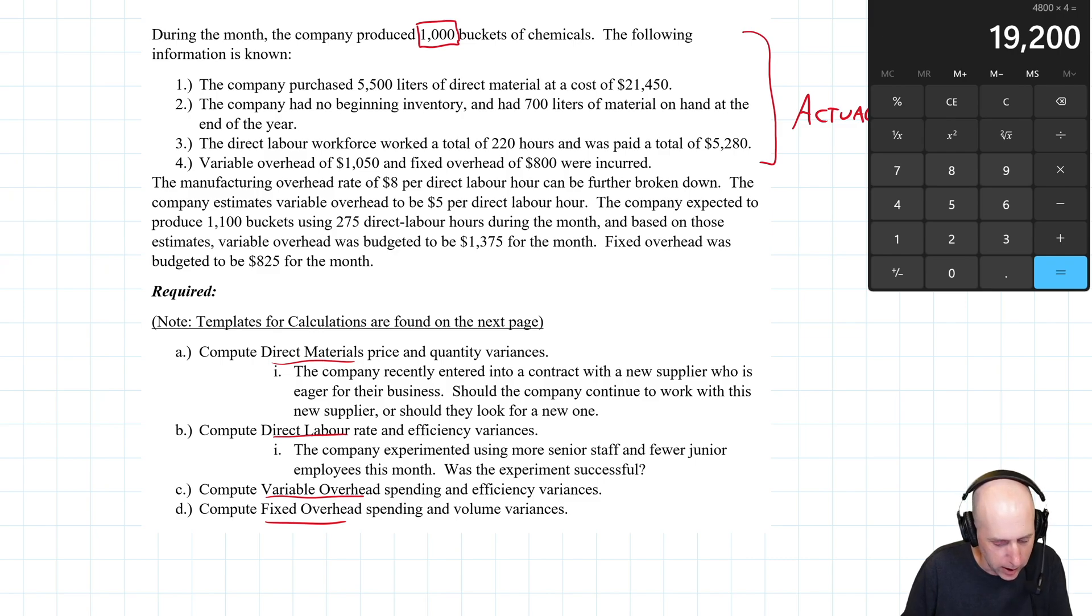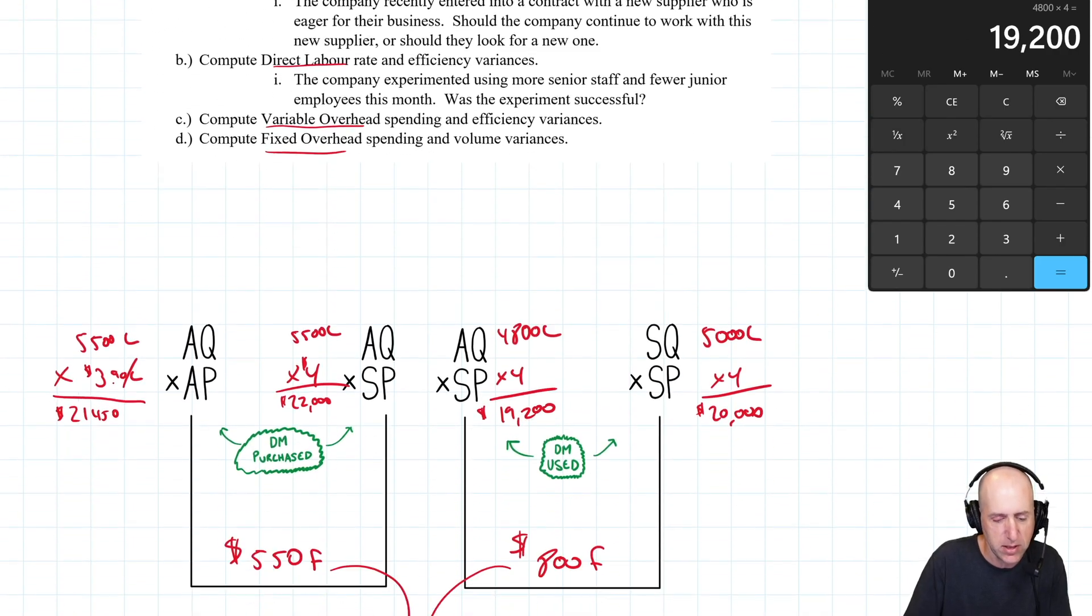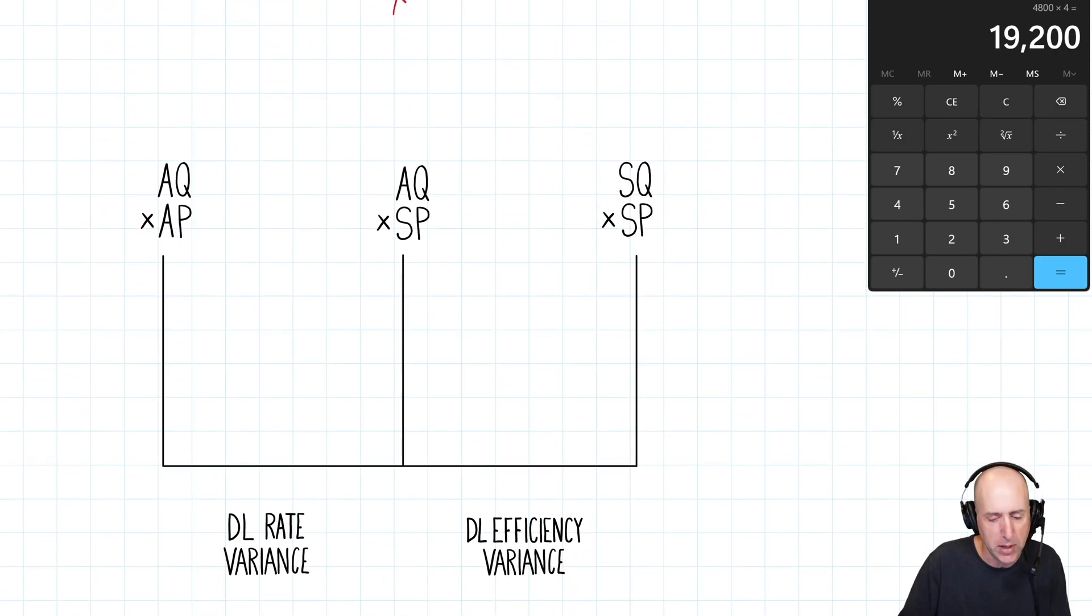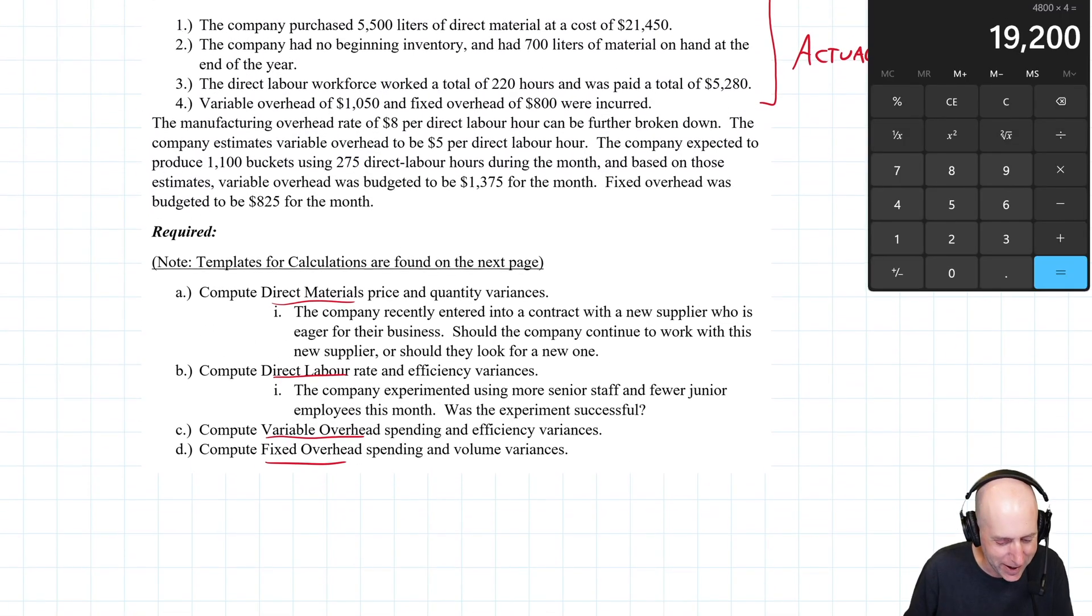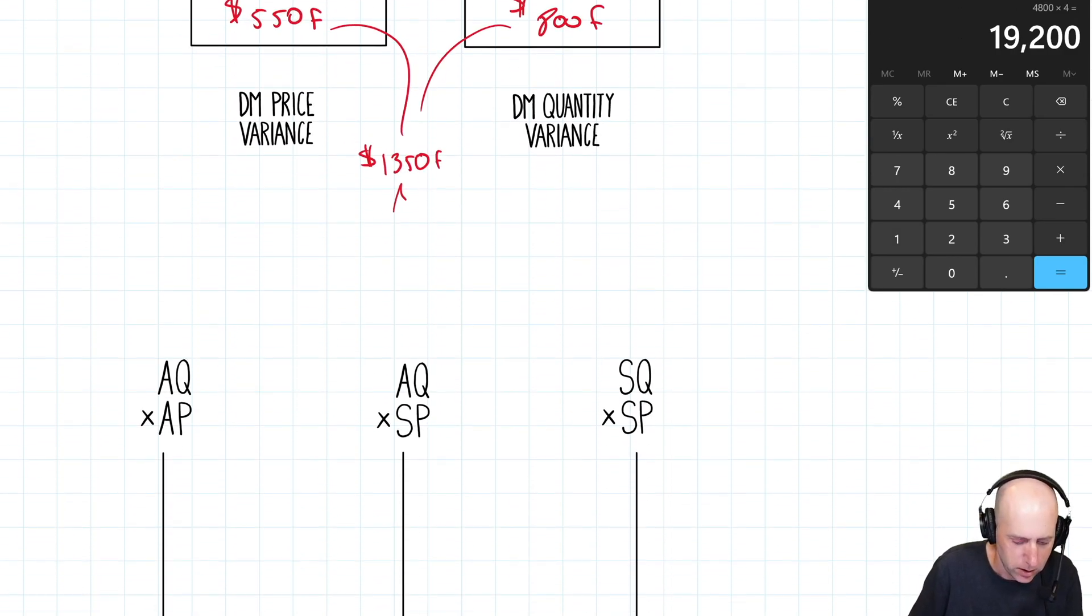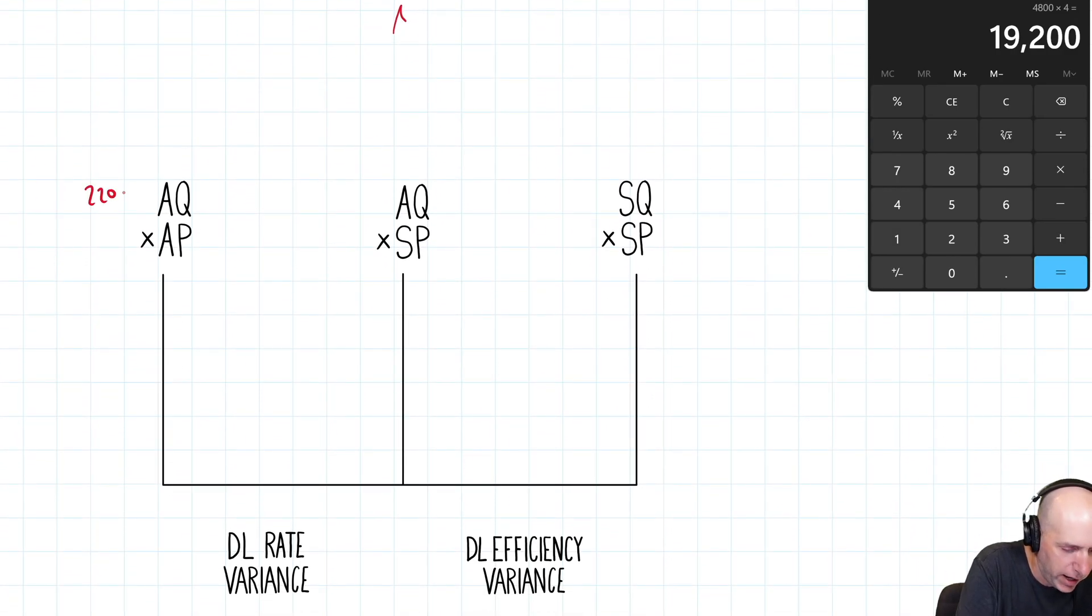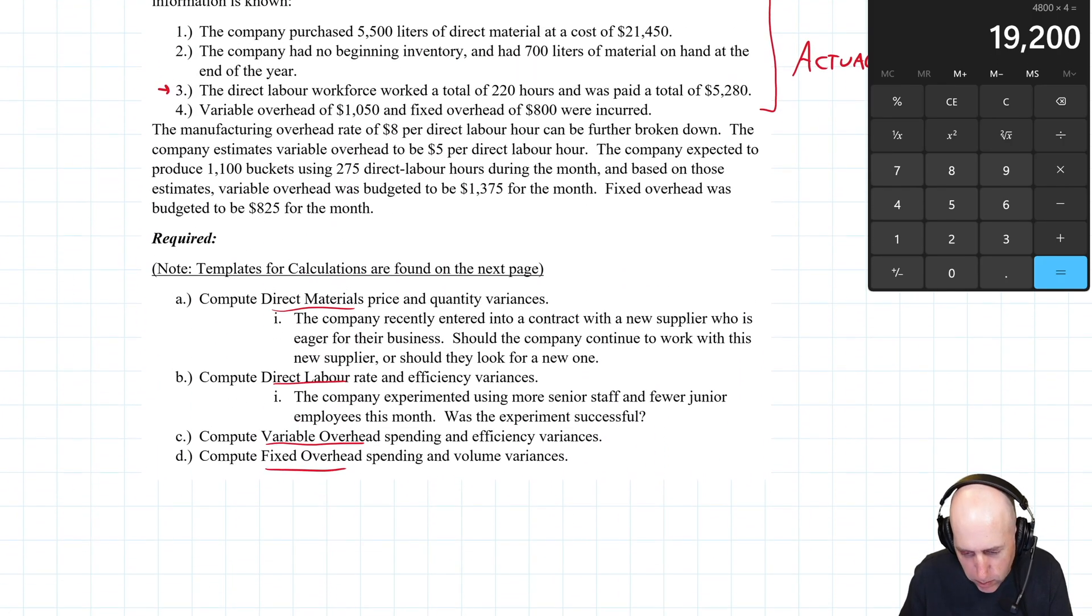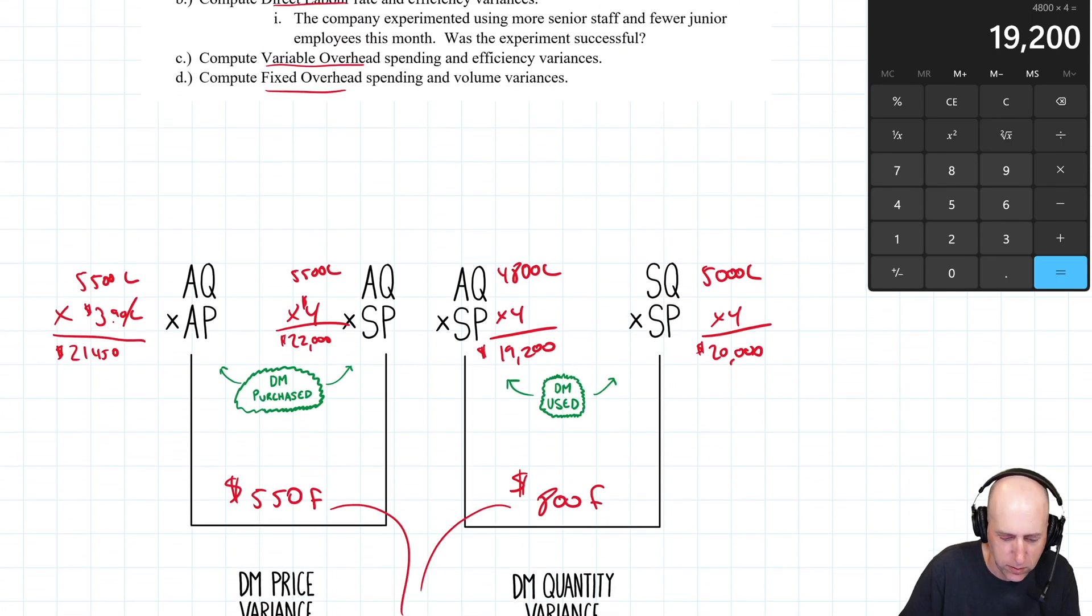Let's continue on to B. B asks us to compute the labor rate and efficiency variances. So let's look at our labor actuals here. It says direct labor workforce worked 220 hours, total of $5,280. So AQ, of course, for labor is actual hours, which is 220 direct labor hours. AP is the actual rate per hour, which I don't know, but I do know the total amount I paid them, which was $5,280.